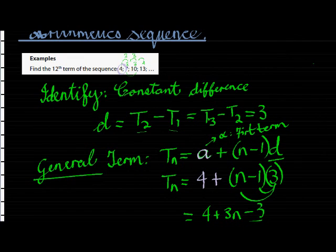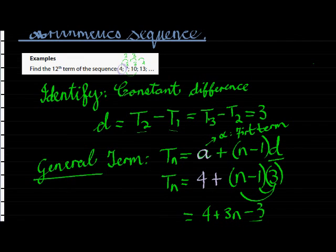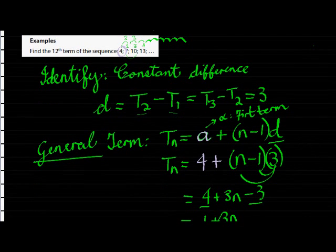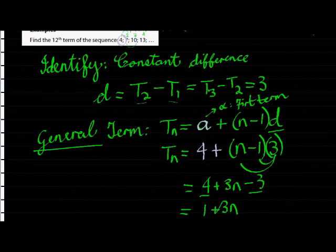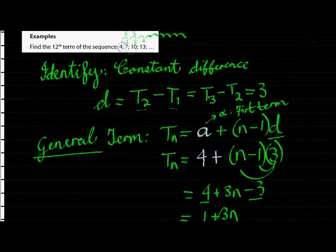Why did I need the general term? Well, you could have, if you wanted to, add three every time until you get to the twelfth term. And twelfth term isn't that far along, so you might have been able to do that without difficulty. But if it was the hundred and twelfth term, it would have taken a while. But now instead what we can do is add three a number of times.